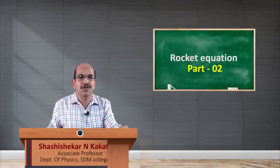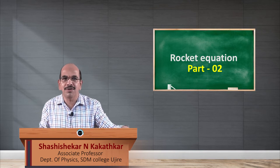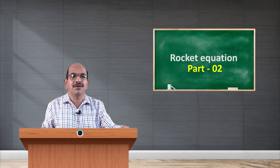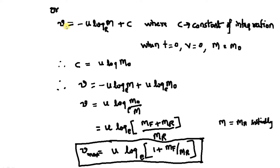Hello friends. Based on the law of conservation of linear momentum, our attempt was to find out the velocity with which the rocket is moving. In the previous section we have seen that the final velocity of the rocket is equal to minus u times log m to the base e plus C, where v is the velocity to be achieved, u is the velocity with which the escaping gases move, m is the instantaneous mass of the rocket, and C is the constant of integration.